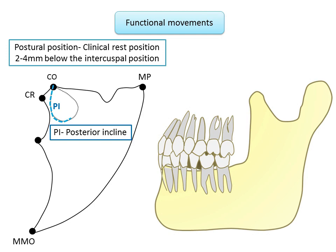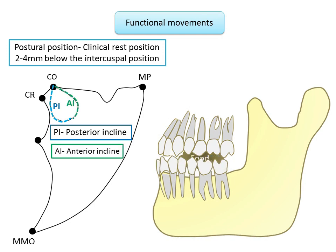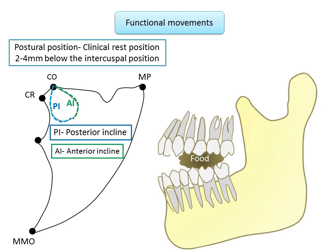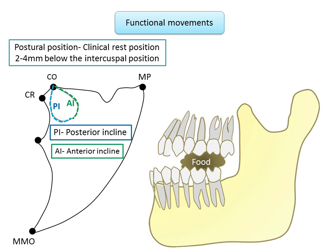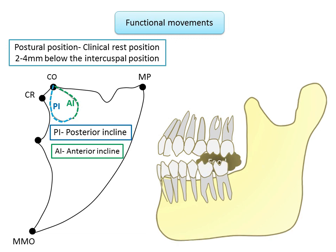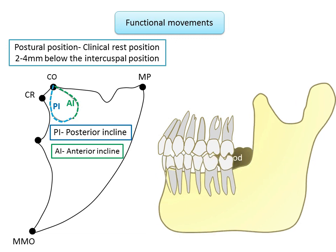During the chewing cycle, the mandible drops directly inferior until the desired opening is achieved, then shifts to the side of the bolus and rises up. In maximum intercuspation or centric occlusion, the bolus is broken down between opposing teeth. In the final millimeter of closure, the mandible shifts back to the intercuspal position.